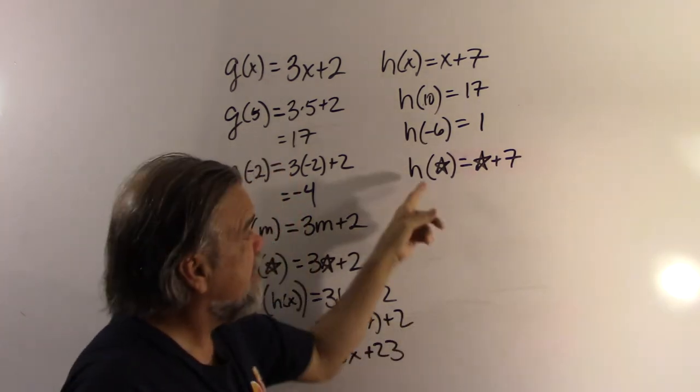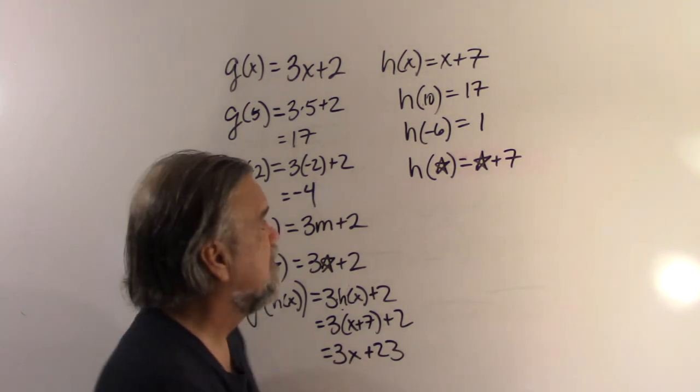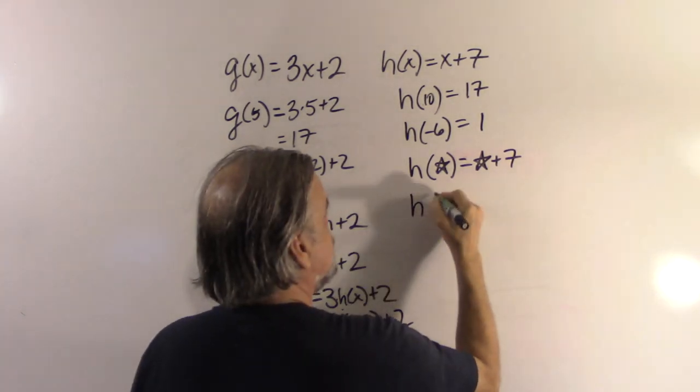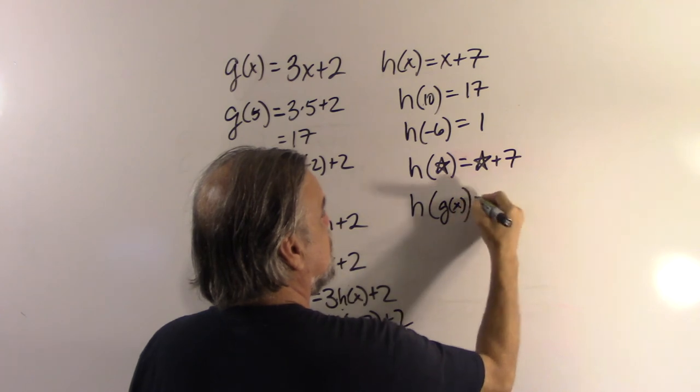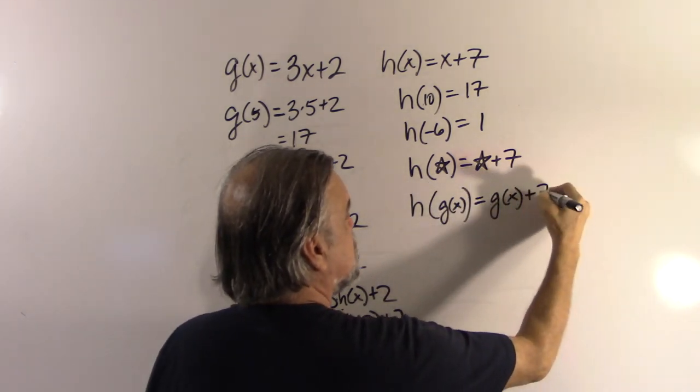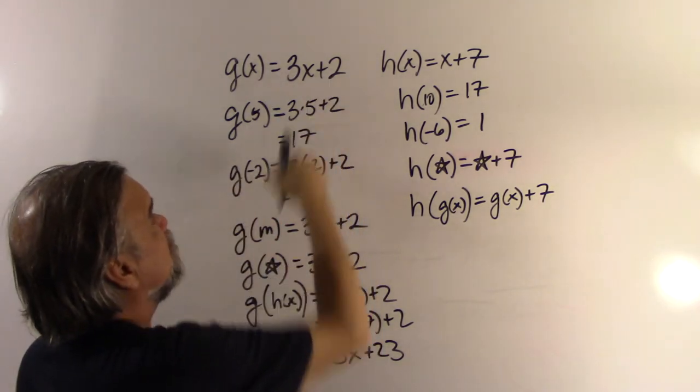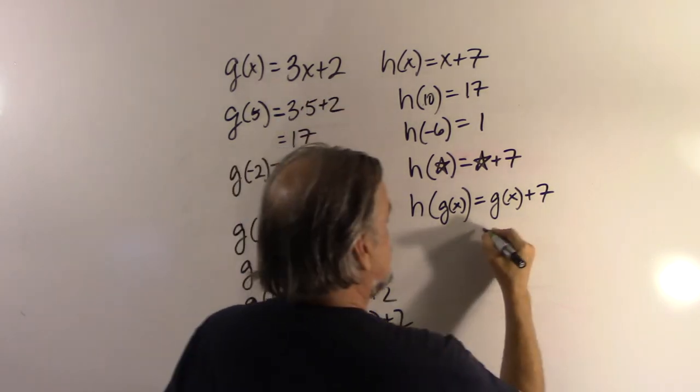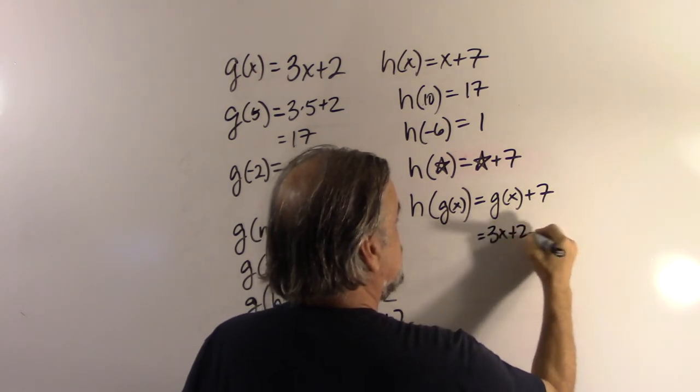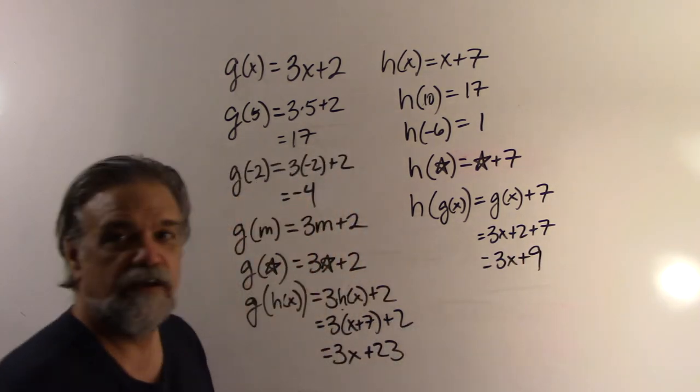Remember, anything, whatever's in the parentheses there, that takes the place of x. And now, if I have h(g(x)), that'll just be g(x) plus 7. But what is g(x), pray tell? It's 3x plus 2. So, this is 3x plus 2 plus 7, which is 3x plus 9.